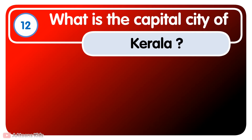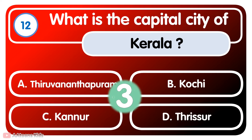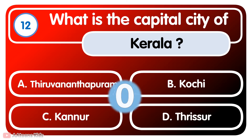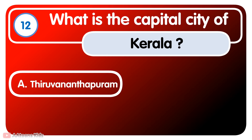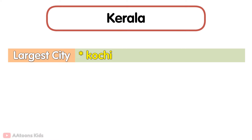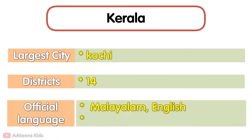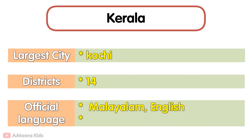What is the capital city of Kerala? Thiruvananthapuram is the capital city of Kerala. The largest city in Kerala is Kochi. It has 14 districts. Its official languages are Malayalam and English. Kerala is famous for Kathakali dance.